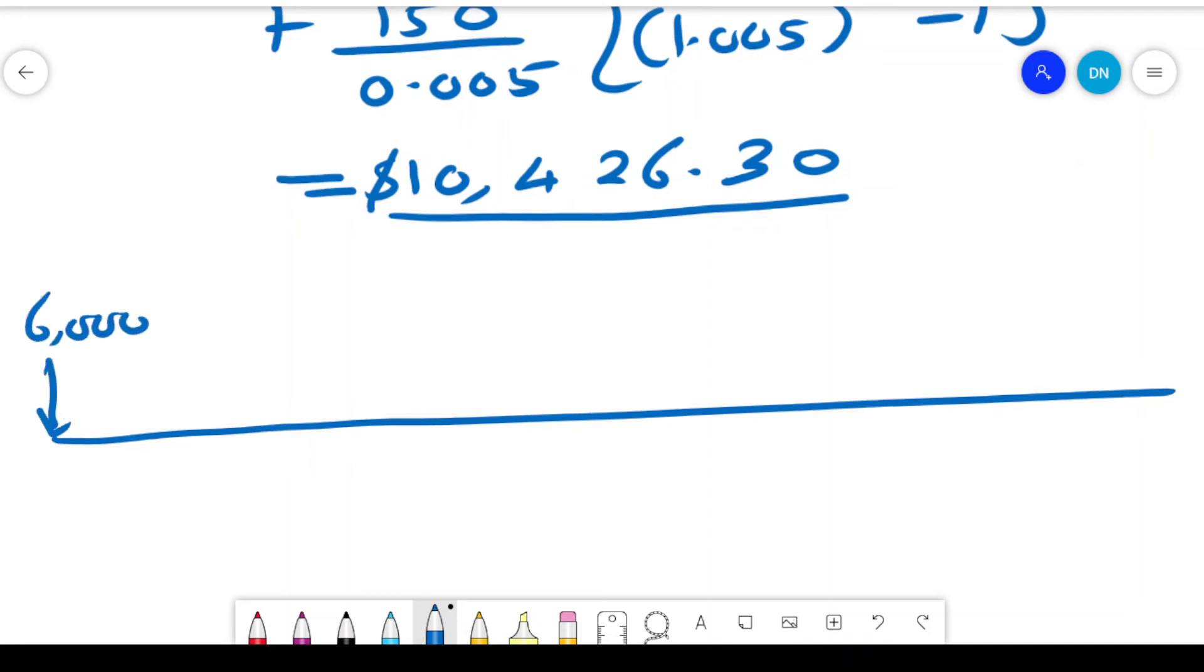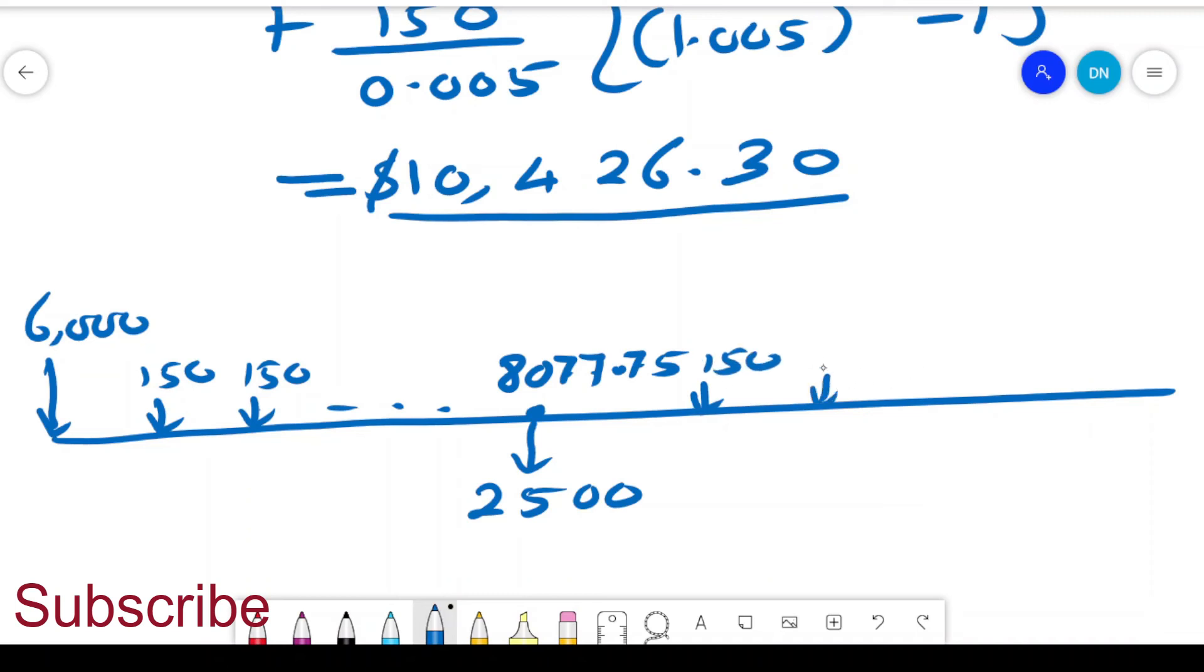Anne deposited $6,000, and at the end of each month, she would put in $150. And that went on for two years. At the end of the two years, she had to make a withdrawal of $2,500. And how much money was left in the account? We have seen it was $8,077.75. And then she continues to make a deposit of $150 until the last deposit. And we've seen that after that, what was in the account will be $10,426.30. So that is the total amount of money that is there, and so this is the future value. The future value will be equal to $10,426.30.